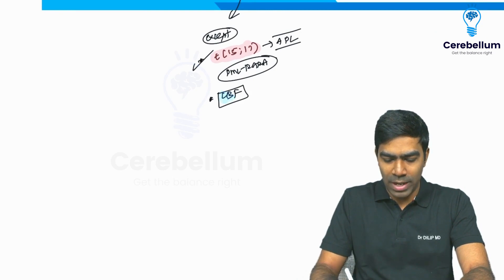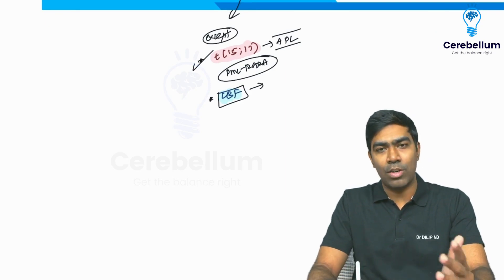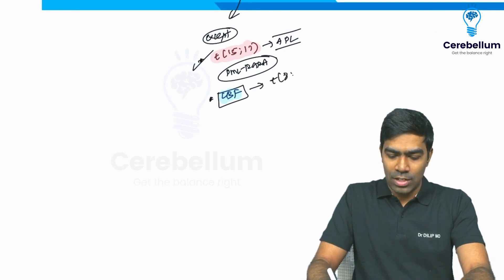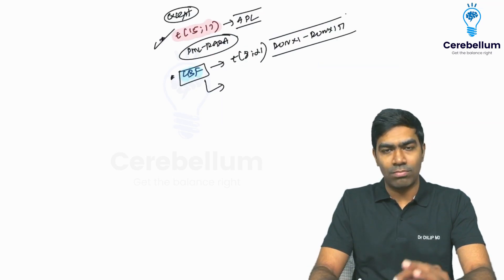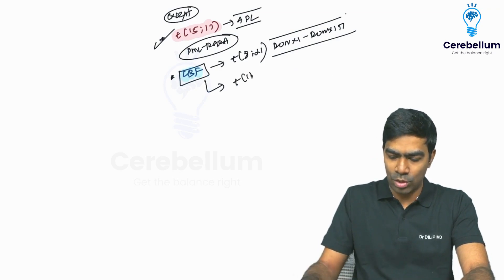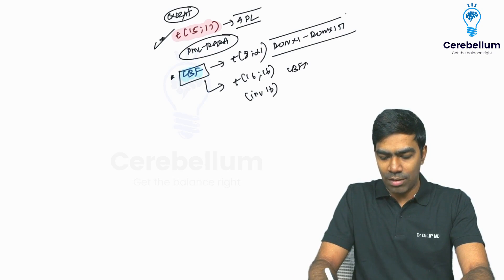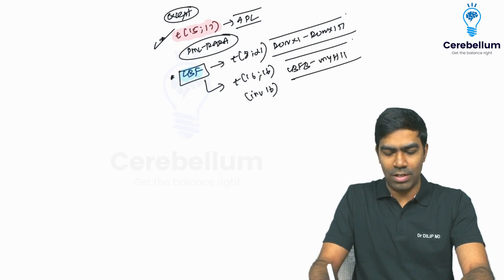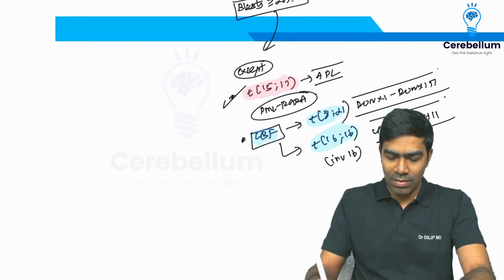The second exception is core binding factor (CBF) leukemias. There are two important cytogenetic abnormalities here. First, t(8;21), which results in fusion of two important transcription factors, RUNX1 and RUNX1T1 — that is one example of a CBF leukemia. Second is t(16;16), otherwise called inversion 16, which results in fusion of CBFB along with MYH11.